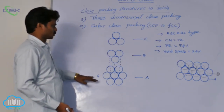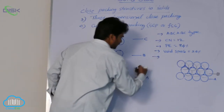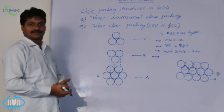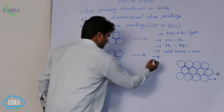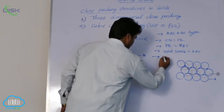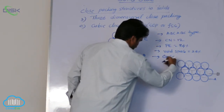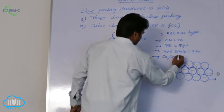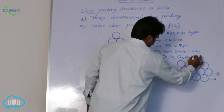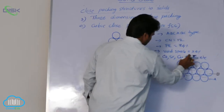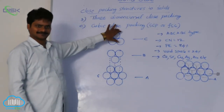This is about cubic close packing. What are some examples of metals that adopt cubic close packing? Calcium, strontium, copper, silver, gold, and others — these metals adopt CCP geometry.